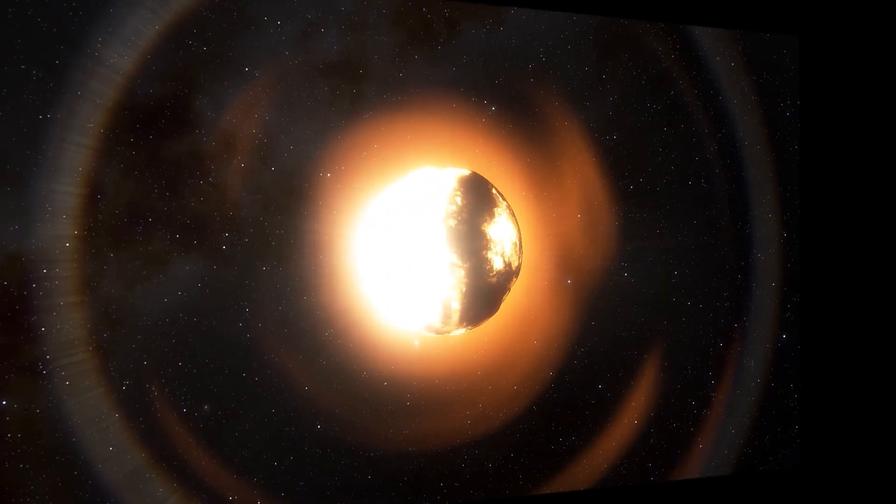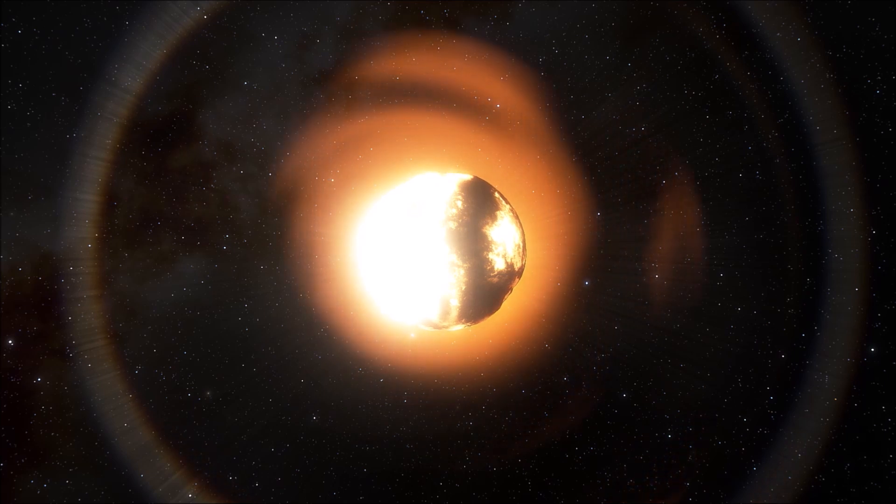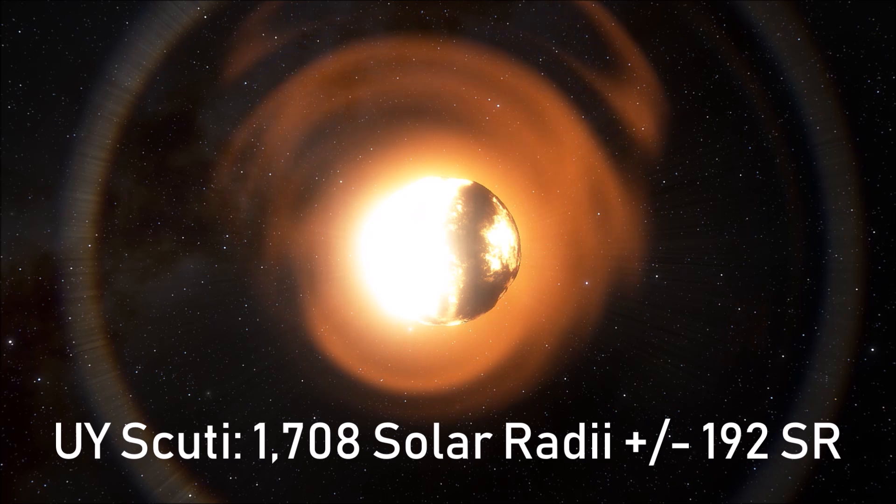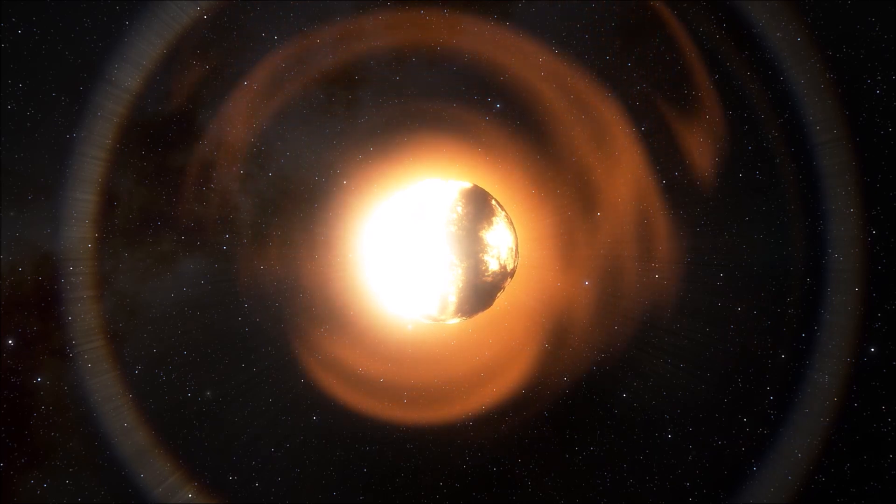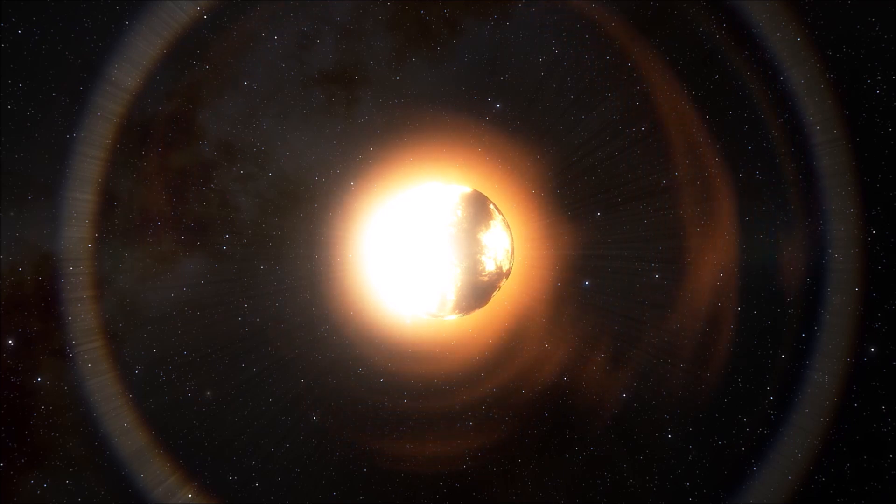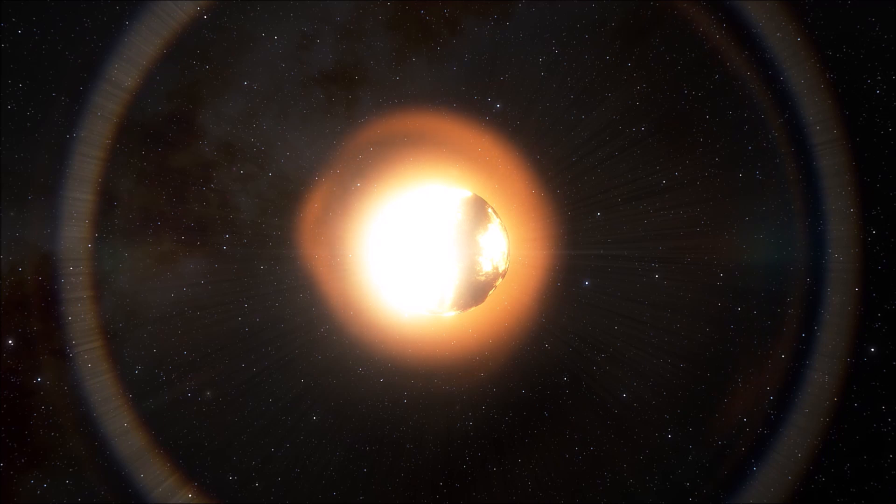In comparison, UY Scuti's radius is estimated to be approximately 1,708 solar radii, give or take 192. This means that even at its lower bound estimate, it is still in excess of 1,500 times the size of the sun and most likely the larger of the two red hypergiants.